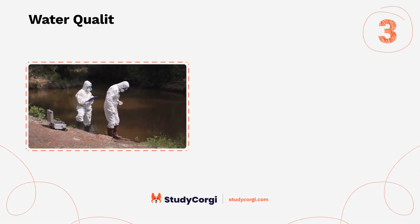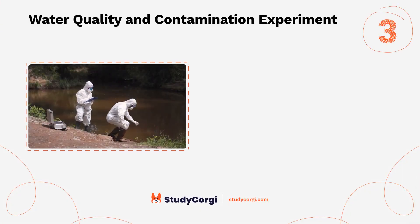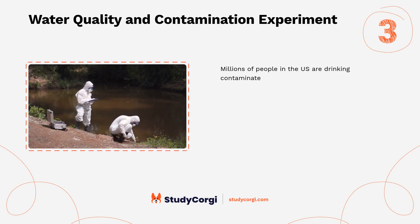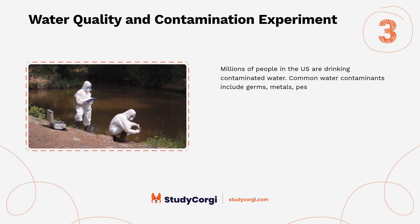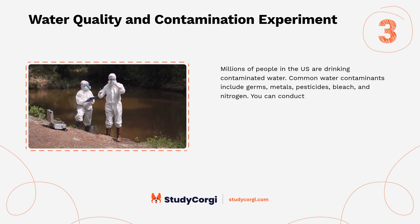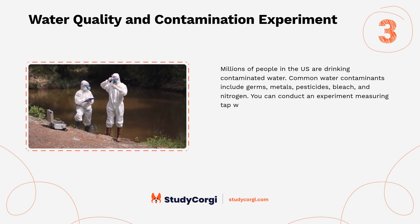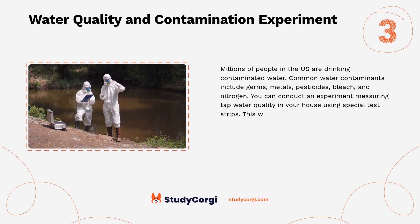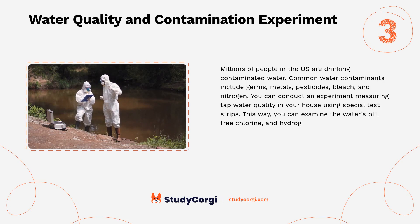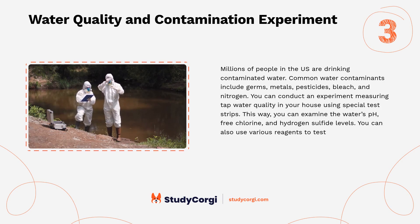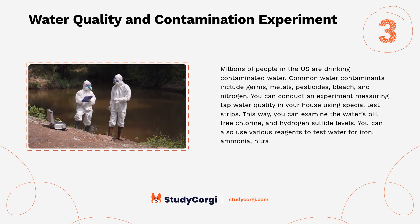Water quality and contamination experiment: millions of people in the U.S. are drinking contaminated water. Common water contaminants include germs, metals, pesticides, bleach, and nitrogen. You can conduct an experiment measuring tap water quality in your house using special test strips. This way you can examine the water's pH, free chlorine, and hydrogen sulfide levels. You can also use various reagents to test water for iron, ammonia, nitrates, and other impurities.